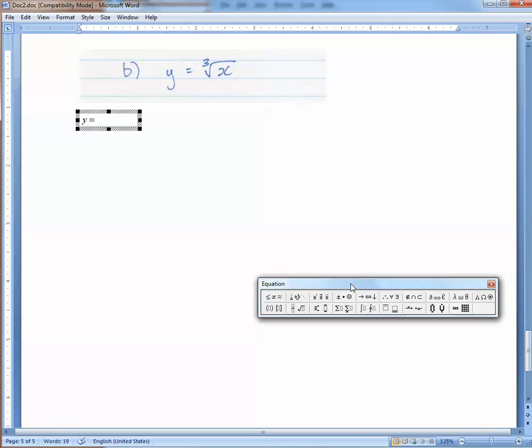y is—and what it really is—is x to the exponent 1 third. So let's create the exponent, and then within the exponent we have a fraction 1 over 3.